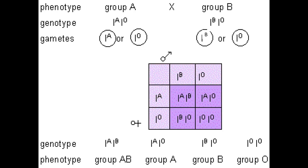Here is a Punnett square test cross example using blood groups. Phenotype group A has genotype I^A I^A or I^A I^O, and group B has genotype I^B I^B or I^B I^O. Using gametes I^A and I^O with I^B and I^O, the test cross gives four possible genotypes: I^A I^B, I^A I^O, I^B I^O, and I^O I^O, giving phenotypes AB, A, B, and O respectively. The recessive allele here is group O.